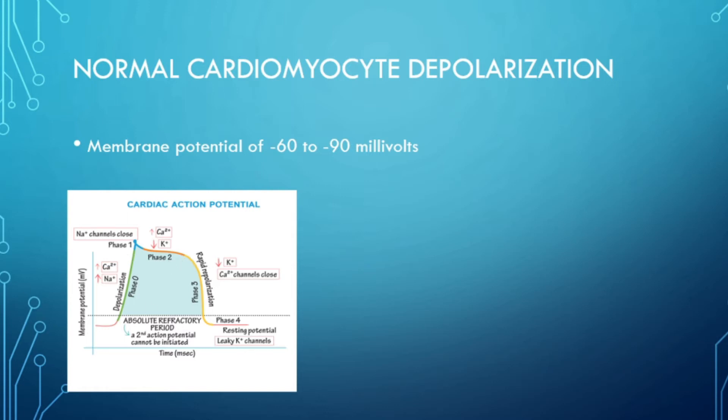After phase 2, the calcium channels close, the sodium-potassium channels remain open, and the potassium ions slowly leak out. Because they are positively charged, the membrane potential decreases into the negative millivolts — you can see that in phase 3 of the cardiac action potential, which is called repolarization.